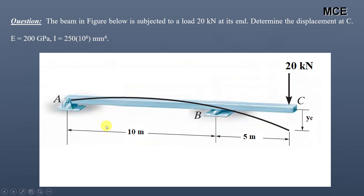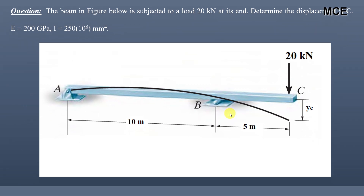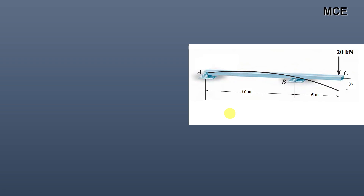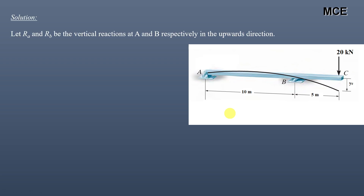This is an overhanging beam having a length of 15 meters, with a hinge support at A and a roller support at B. First we will find the reactions in the beam, so let us assume that RA and RB are the vertical reactions at A and B respectively in the upward direction.